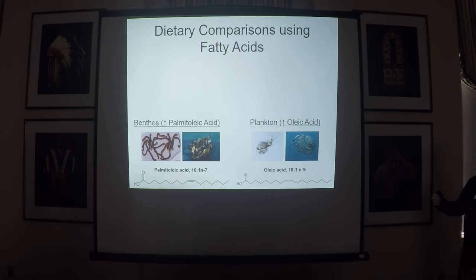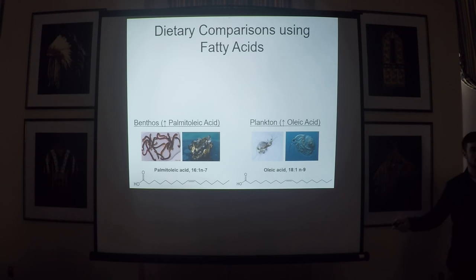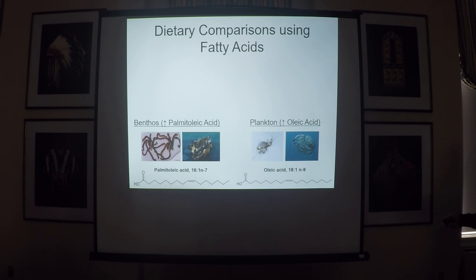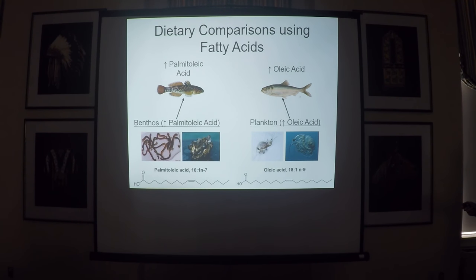To get an idea of how fatty acids move throughout a food chain: you start with fatty acids in benthic or pelagic regions. An example is palmitoleic acid, 16:1n-7 — 16 being the number of carbons, 1 being one double bond, and 7 being where that double bond is located. When a fish consumes those items, the fatty acids get transferred to that fish as well. So the round goby here on the left shows higher palmitoleic acid because, being a more benthic fish, it receives more of those benthic fatty acids. In comparison, the alewife on the right gets more oleic acid from pelagic sources.